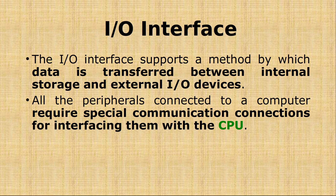These devices are generally called peripheral devices. The operating mode, speed, and data transfer of peripheral devices are totally different from the CPU. The CPU and memory are electronic devices with very high speed, whereas peripheral devices are electro-mechanical devices, so their signals and operating modes are different.